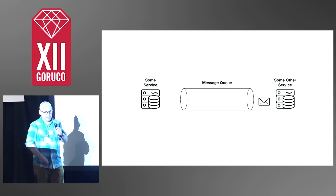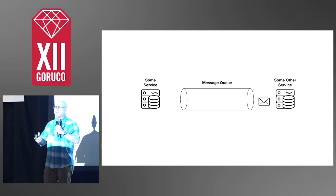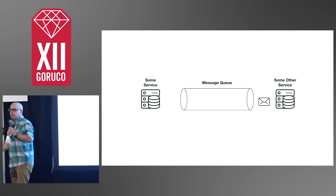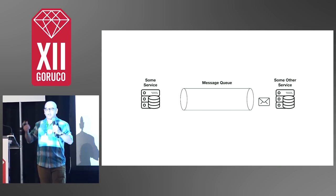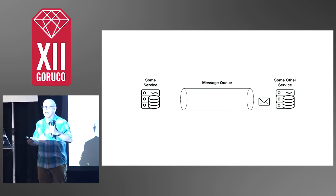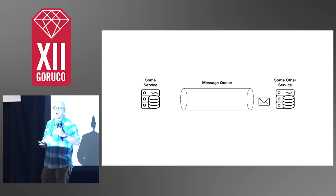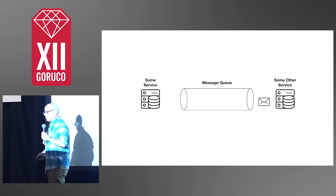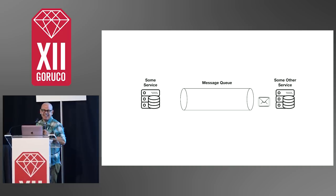What if that message is the one that says 'process your direct deposit for your salary'? If you're the bank, not terribly great. Let's say everybody here works in the same company, everybody makes X thousands of dollars on their paycheck, and all those messages get processed twice. The bank is going to give everybody in the room a double paycheck.